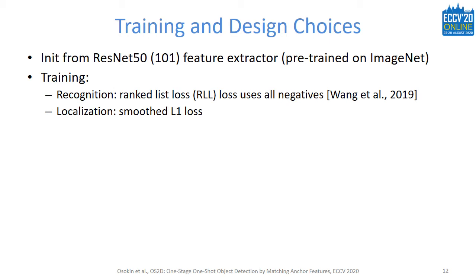For training, we initialized the feature extractor from a network pre-trained on ImageNet. For the recognition head, we used the recently proposed Ranked List loss. Differently from the standard contrastive loss in metric learning, it does not require picking only a few negatives, but instead downweights negatives in a soft way. For the localization head, we used the standard smoothed L1 loss. We also added a novel feature of remapping positive-negative targets after the forward pass, which made sense because the final detection scores were computed at locations different from where the transformation network was applied.